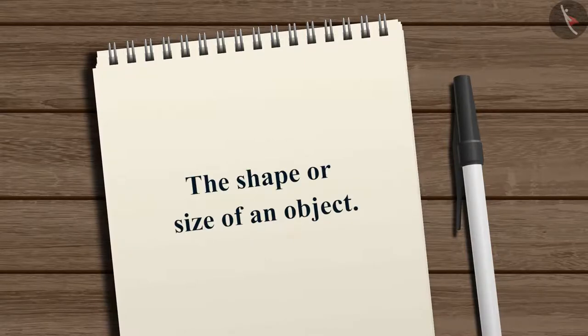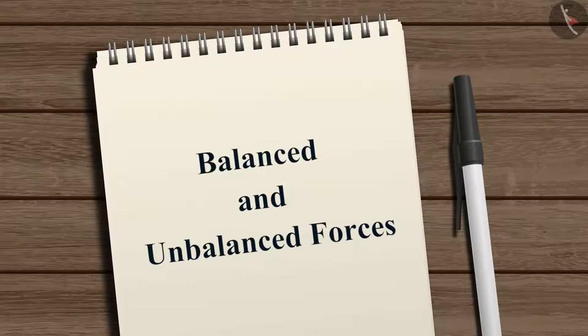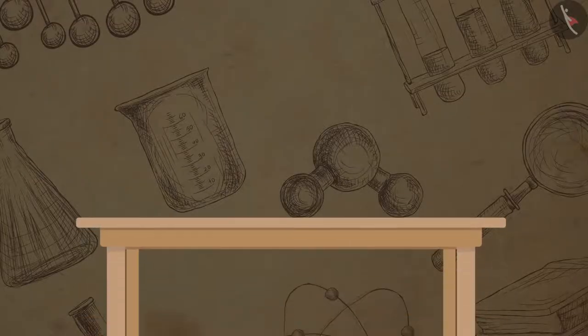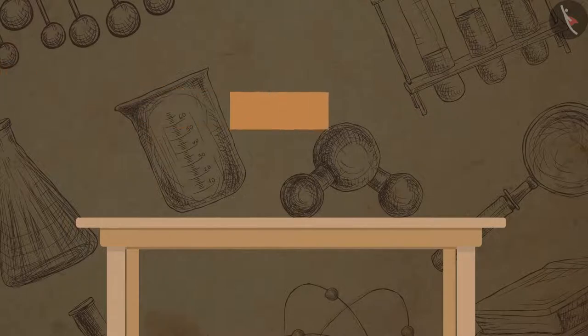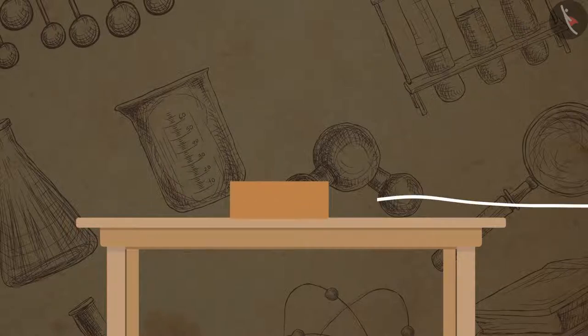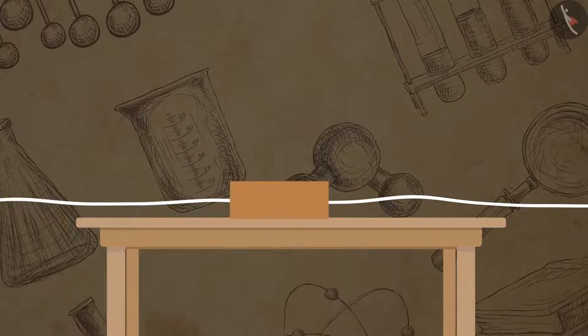Now let us try to understand the concept of balanced and unbalanced forces. Let us do one simple experiment to understand it better. Take a wooden block and place it on a smooth horizontal table. Attach one string on both of the opposite faces of the block.